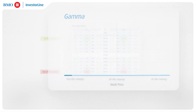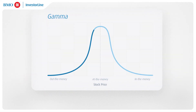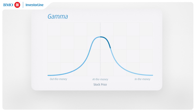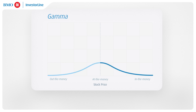For out-of-the-money options, this means a long journey ahead before acquiring any intrinsic value, mirroring a low acceleration due to gamma. Conversely, deep in-the-money options, already near a delta of 1, have little to no gamma, as they effectively mirror the stock's movements.